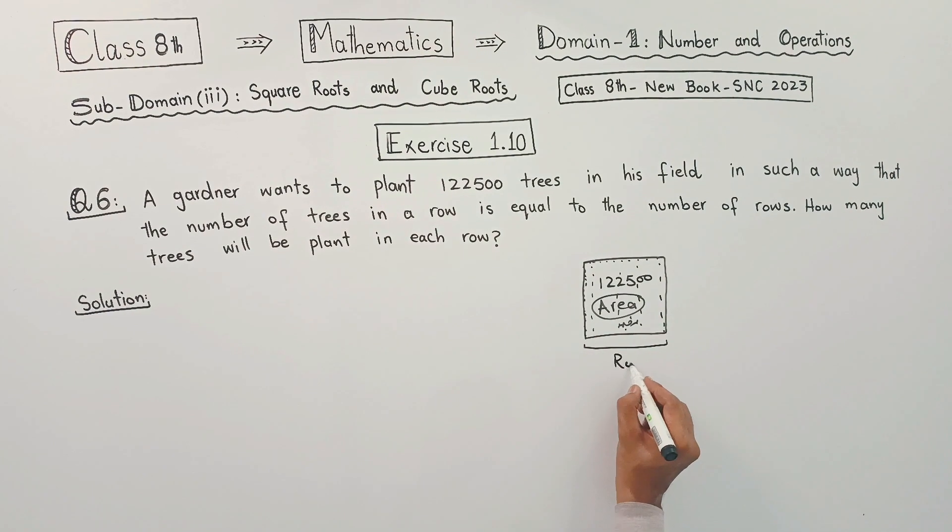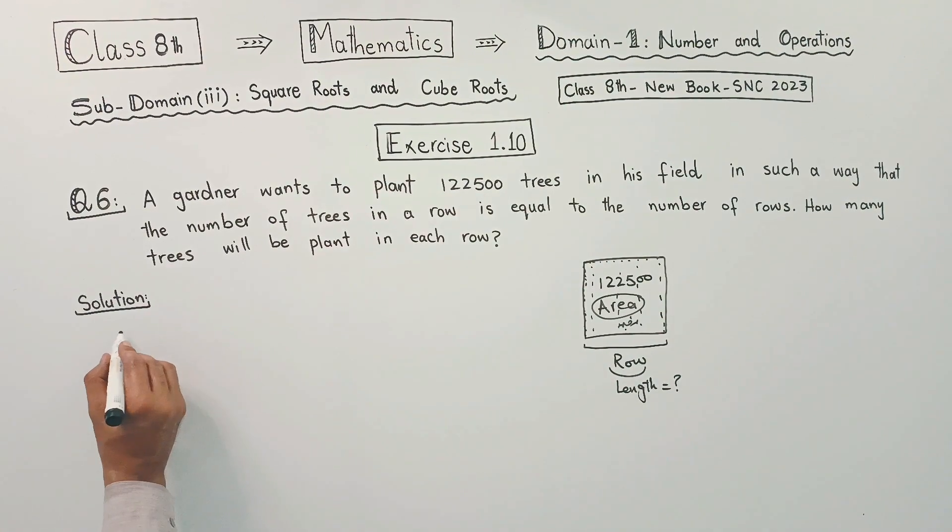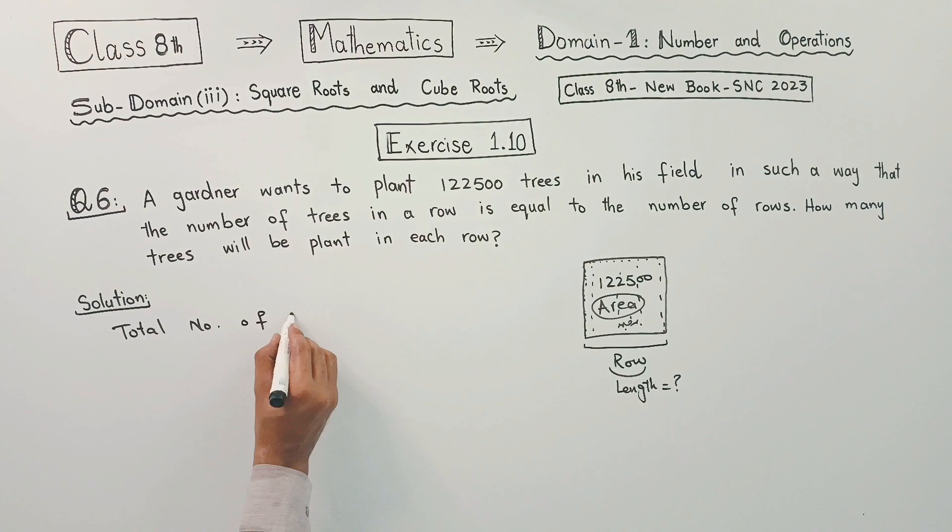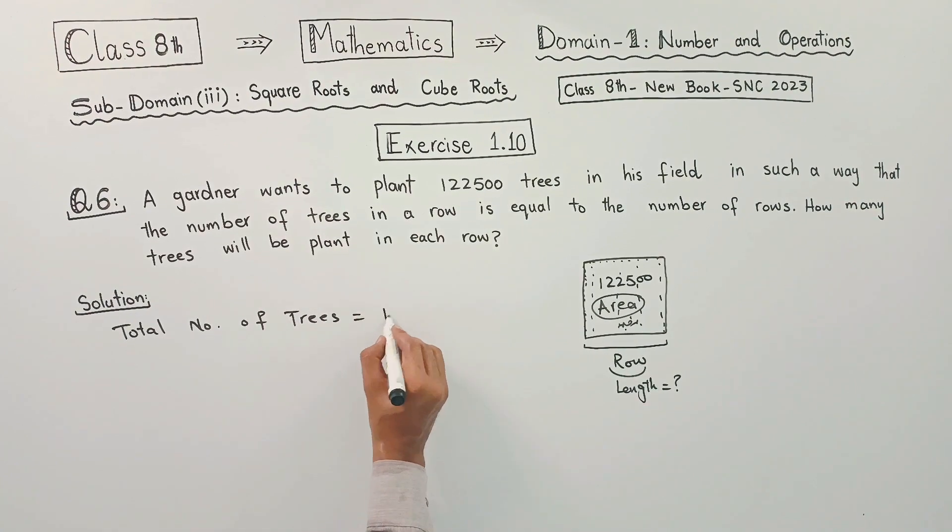This row has a square length. So we basically have to find the length. What we are given is the total number of trees: 1,22,500.